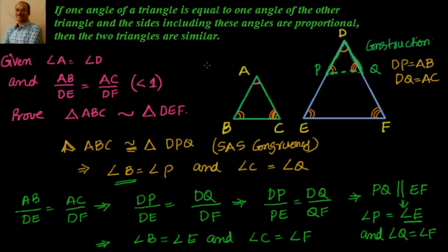So in similarity criteria, we have three criteria: the first is AAA — if three corresponding angles are equal; the second is SSS — if three sides are in proportion; and the third is SAS — if one angle of a triangle equals an angle of the other triangle and the sides including these angles are in proportion, i.e., AB/DE equals AC/DF, then the triangles are similar. With this we have seen all three theorems related to similarity criteria. We will solve some simple examples in the next video based on AAA, SSS, and SAS similarity criteria.